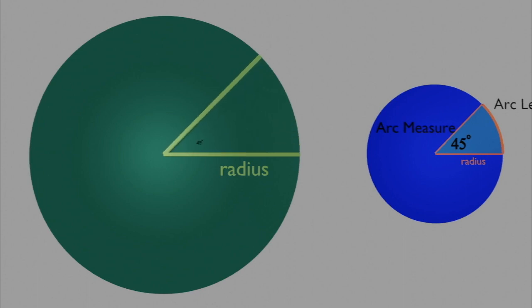I'll sweep out an arc measure of 45 degrees, which is the same as we had before. The arc measure of these two wedges is exactly the same.